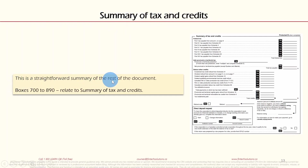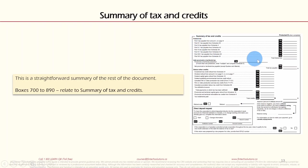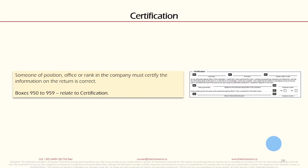Section 11 is Summary of Tax and Credits — a straightforward summary of the rest of the document. Boxes 700 to 890 relate to summary of tax and credits. This shows your corporation's Part One, Part Three, Part Four, Part Six tax — whatever is applicable — along with any deductions or credits, and ultimately whether there is a refund owing or a balance to pay.